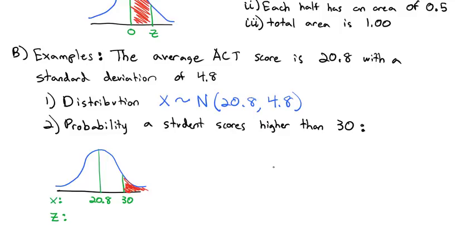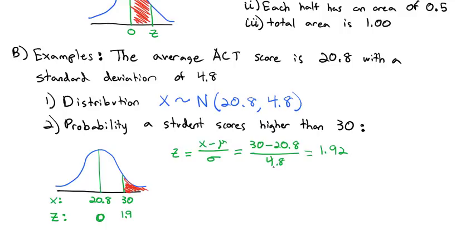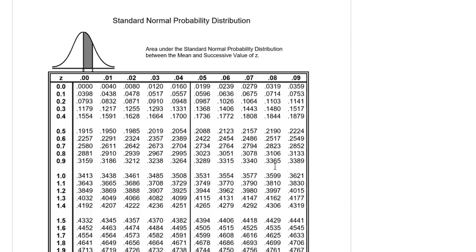Let's change those x values into z's. We know the mean changes to zero. For x = 30, we use the formula: z equals the x value minus the mean, divided by the standard deviation: 30 minus 20.8 divided by 4.8, giving us a z value of 1.92. We always round z values to two decimal digits to match the standard normal table.